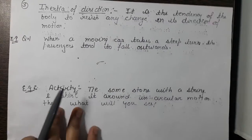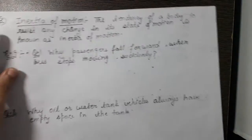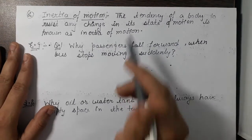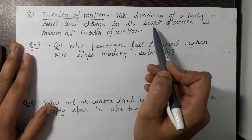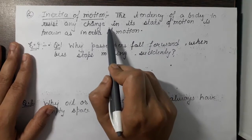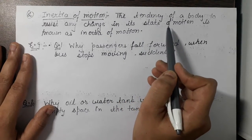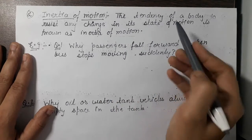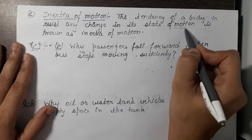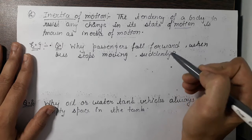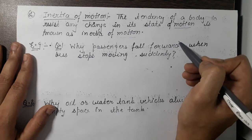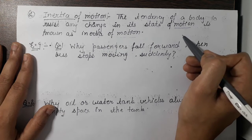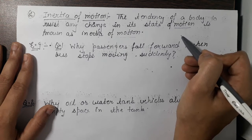Now the second type of inertia is inertia of motion, which is opposite to inertia of rest. The tendency of a body to resist any change in its state of motion is known as inertia of motion. That is, if a body is in motion it will try to remain in the same state — the state of motion — unless an external force is applied.